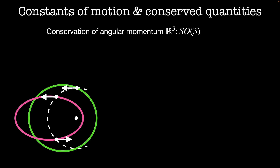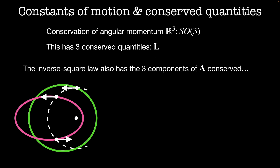Since our system is in three-dimensional Euclidean space R3, we have some rotational symmetry — the system looks the same under the action of some group. In this case that group is SO3, the group of three-dimensional rotations. Since this group is three-dimensional, we have three corresponding conserved quantities, which are the three components of the conserved angular momentum. The algebra produced by the Poisson bracket of the angular momentum is the same as the Lie algebra for SO3. But the inverse square law also has three additional conserved quantities: the three components of the Runge-Lenz vector are also conserved. So what is the corresponding symmetry?